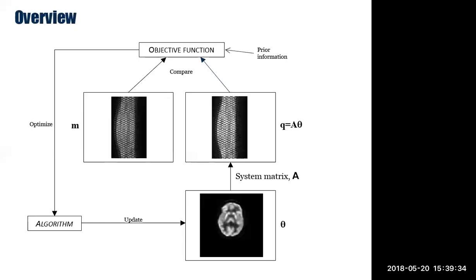Here I'm substituting simple examples with real data — a transverse section through an FDG distribution. This is data from the simultaneous PET-MR scanner, the MMR. It shows a model of the mean which includes not only the forward projection but also normalization — that's why you get gaps between detectors — and attenuation. And the noisy data M. These are real examples to show how it would really look.